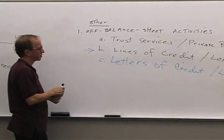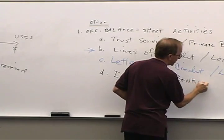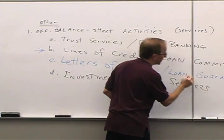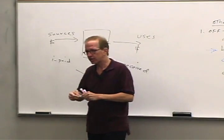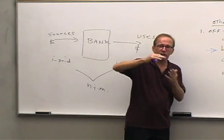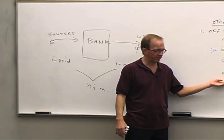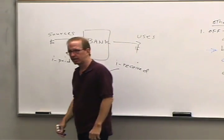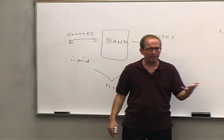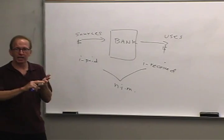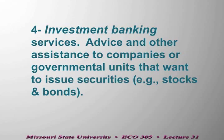Another service is investment banking. Banks started getting into this under Glass-Steagall, which originally said no. Over the years, the Federal Reserve lengthened the list of activities closely related to banking, and banks began entering this business — perhaps 15 to 20 years ago. Glass-Steagall has since been scaled back significantly. Investment banking services involve helping governments or companies that want to issue securities — stocks or bonds, notes, or debentures.